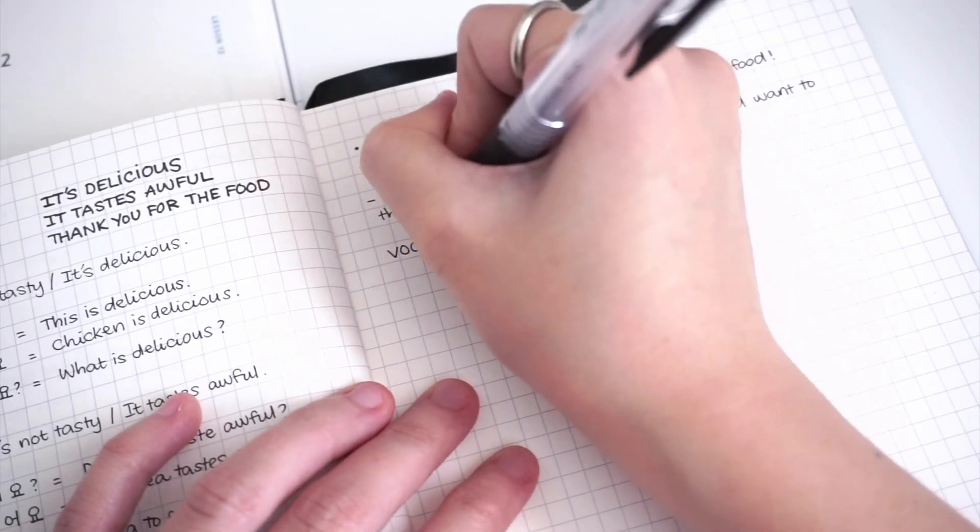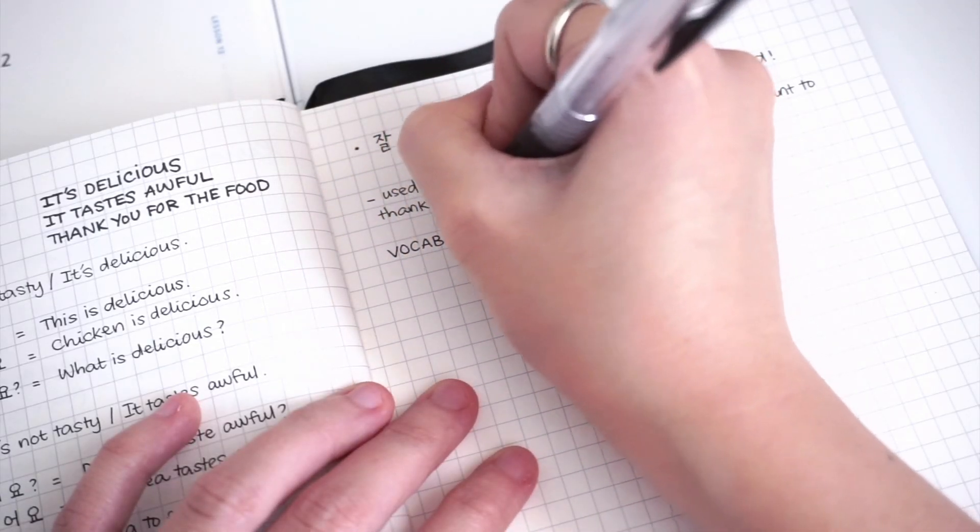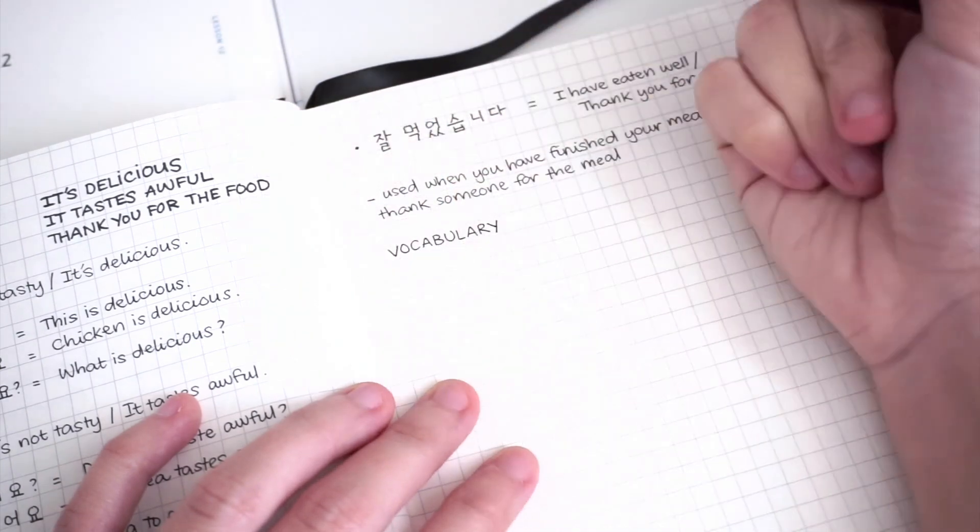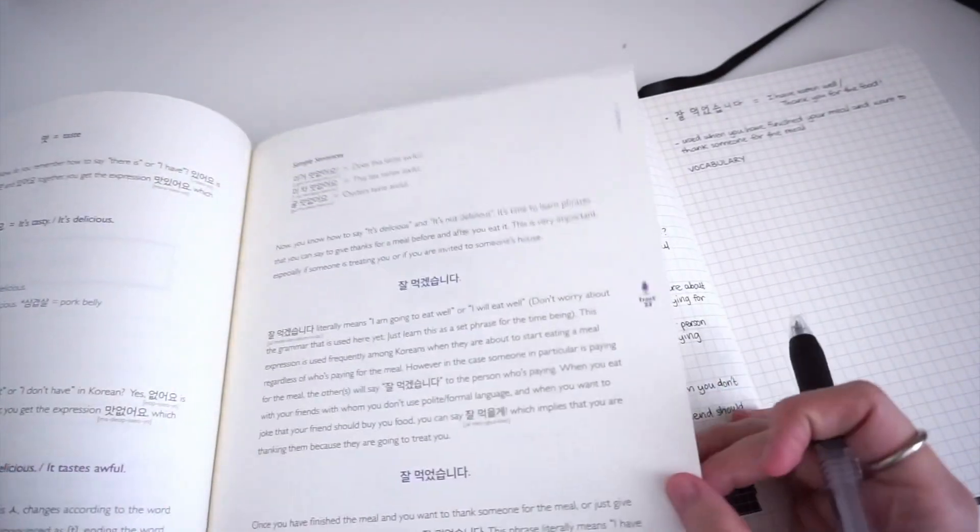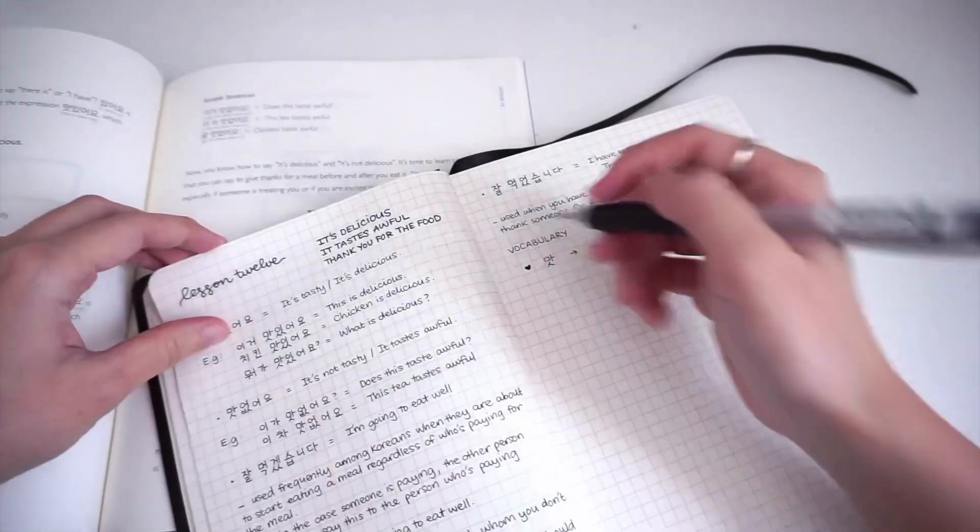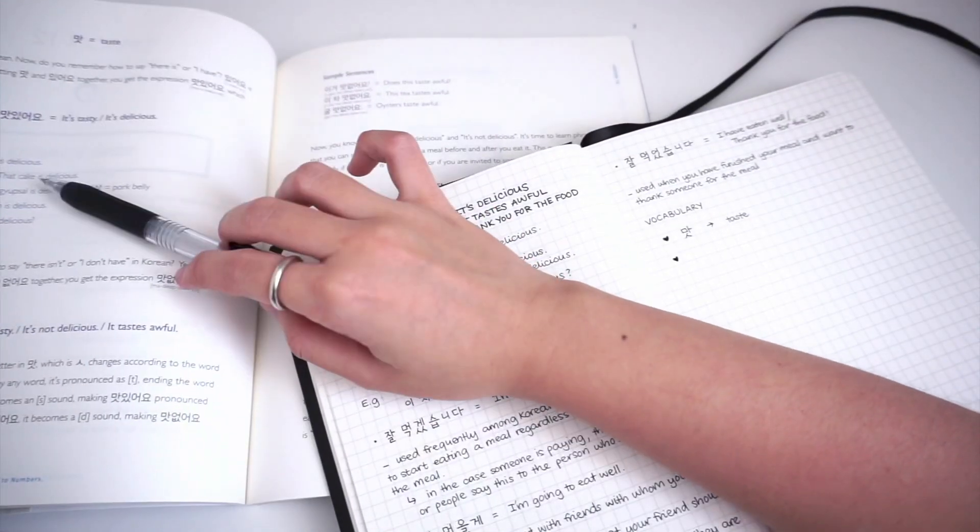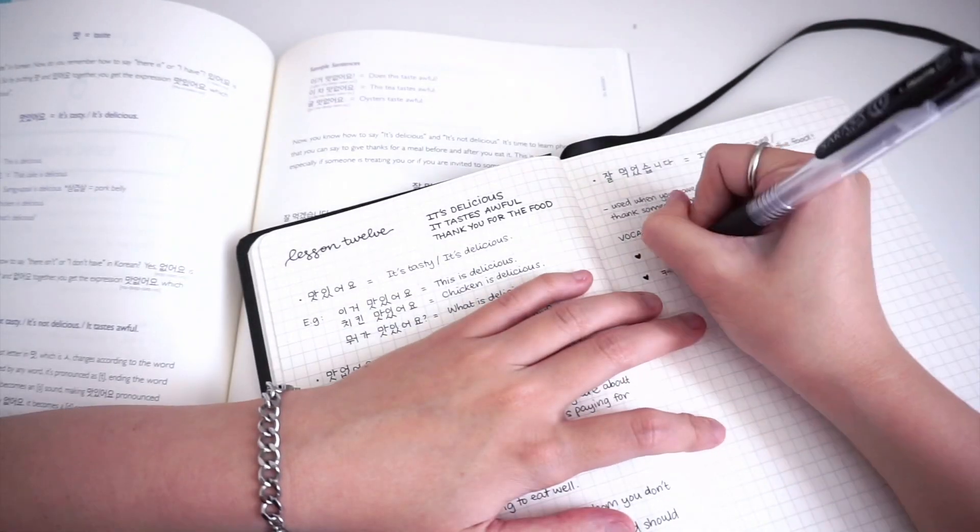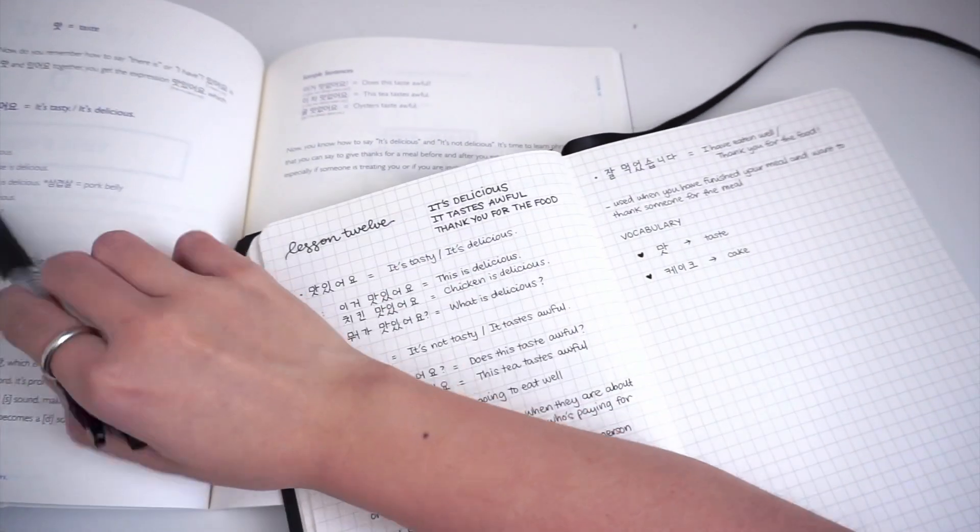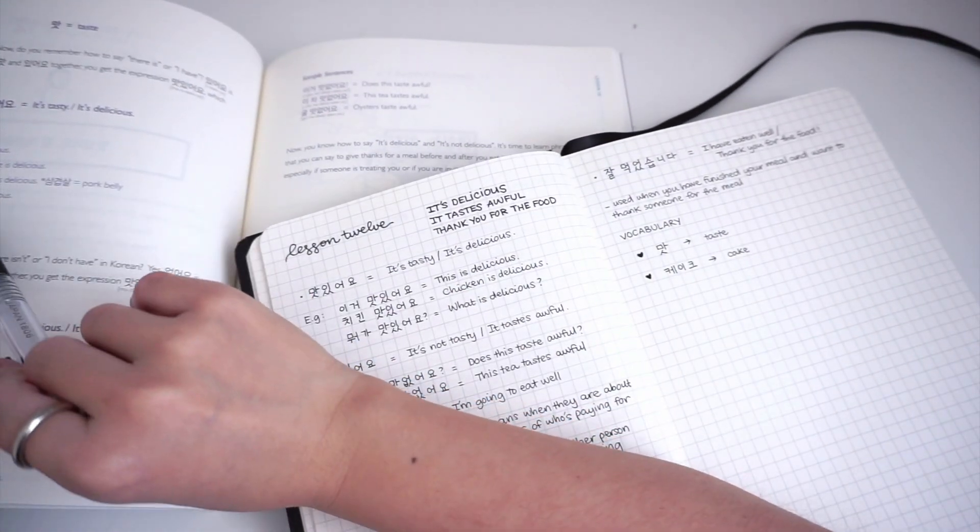Once I finish writing all the main points, I move to the vocabulary section. I like to separate different sections in my notes so it's easier to see. Essentially, Talk To Me In Korean provides three to five new vocabularies in each new lesson so there are always new words to study every time.